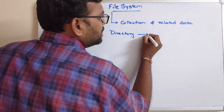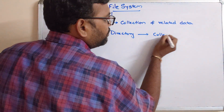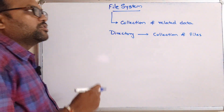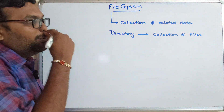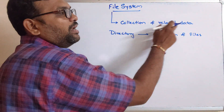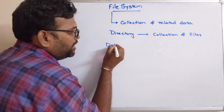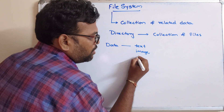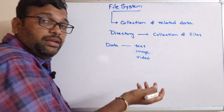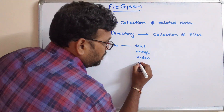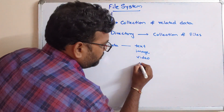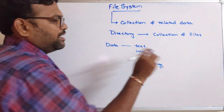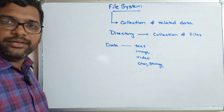A directory means it is a collection of files. So a file is different from a directory. Now, file is a collection of related data, and this data can be either text, or image, or video — it may be a video file, image file, or text file. Characters and strings all come under text data. These are different types of data which can be stored in a file.